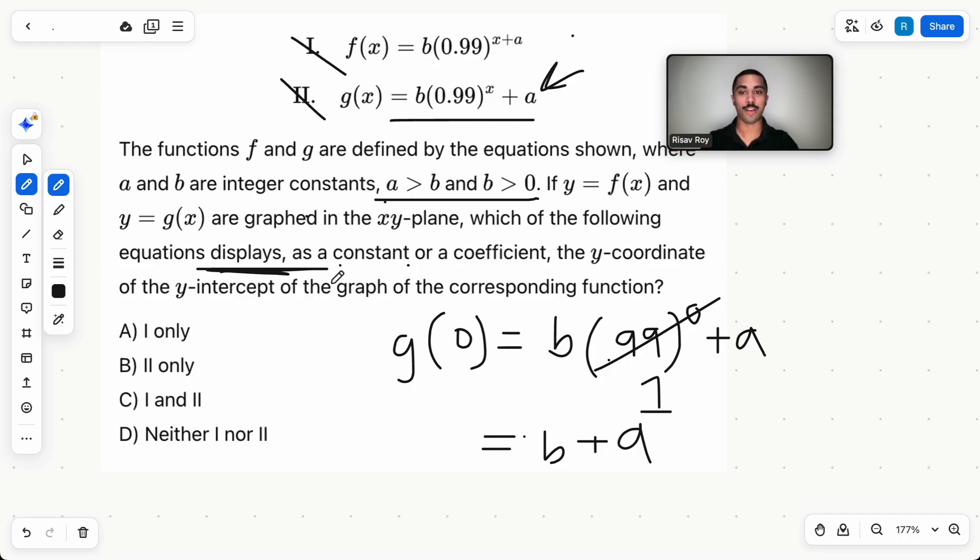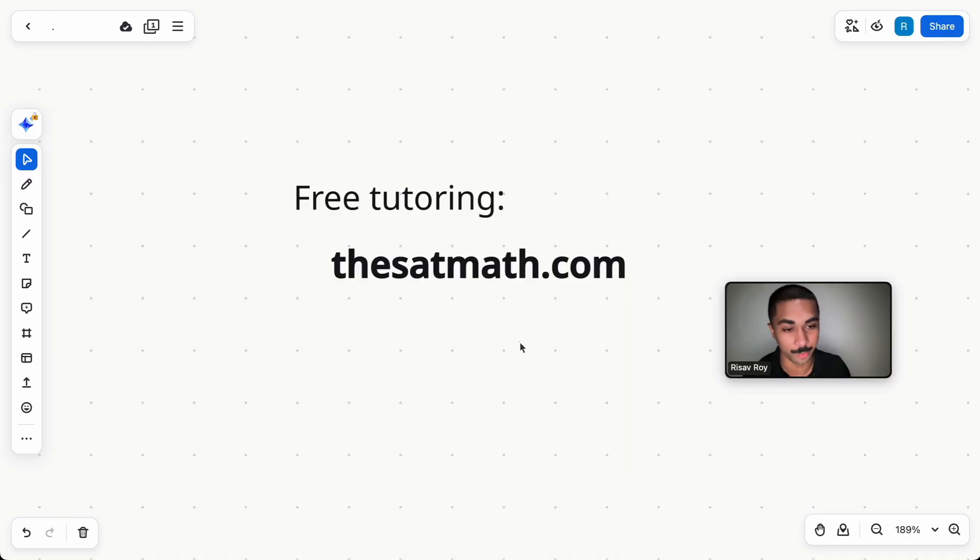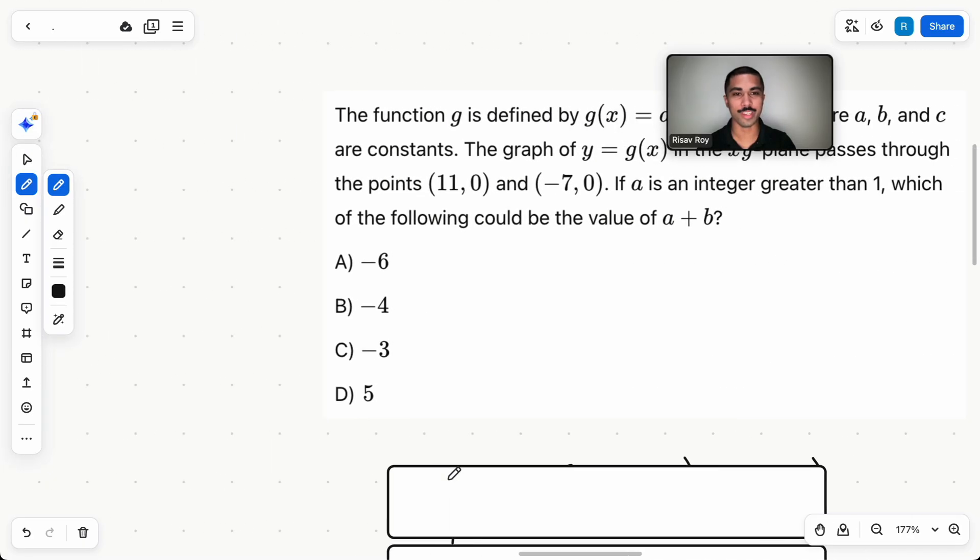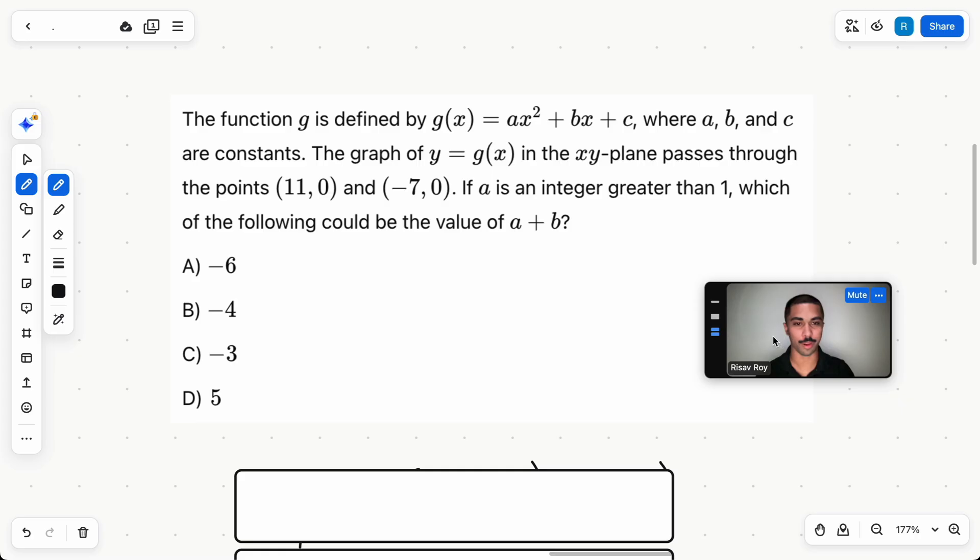Both of these don't have a constant or coefficient that is displayed as the y-intercept of these equations. So our answer is D, neither one or two. Listen up real quick. I'm giving away free tutoring sessions for a limited time. So go to thesatmath.com to get tutored by me for free. Let's move on to the second question.